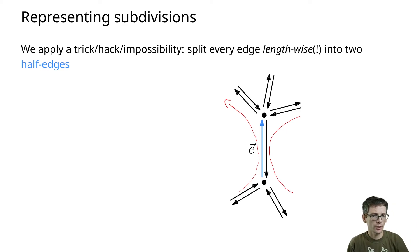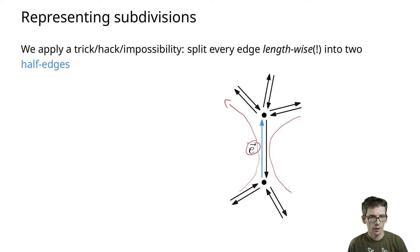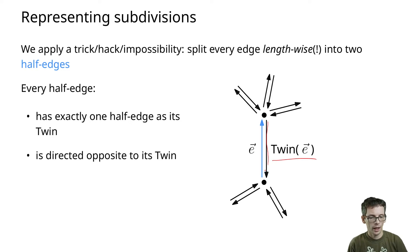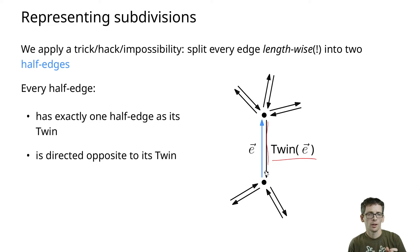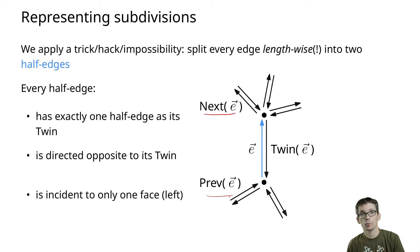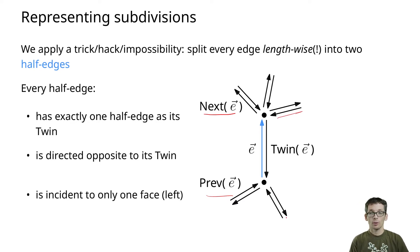For every half edge, it will have a twin — the half edge in the other direction. A half edge is incident to only one face, so it's easy to say what is the next half edge and the previous half edge on that face. Likewise, the twin also has a previous and a next half edge.